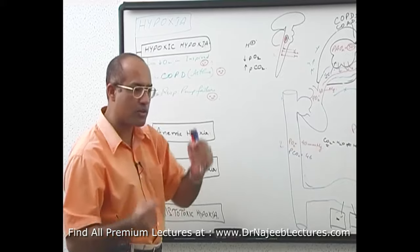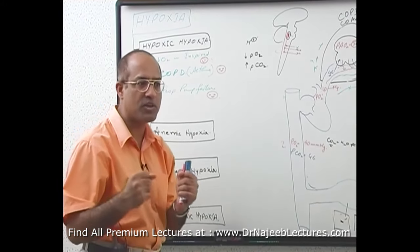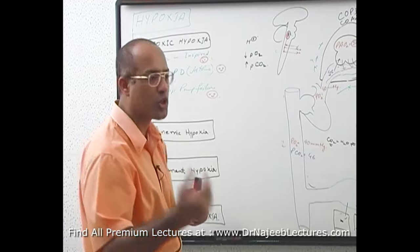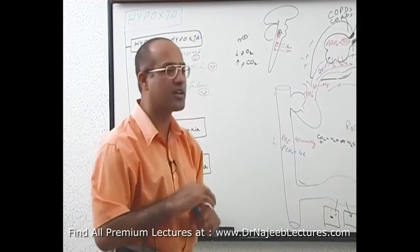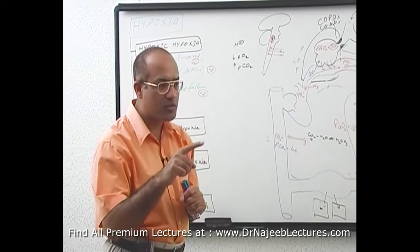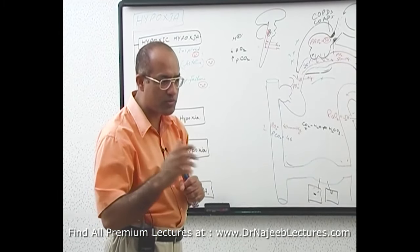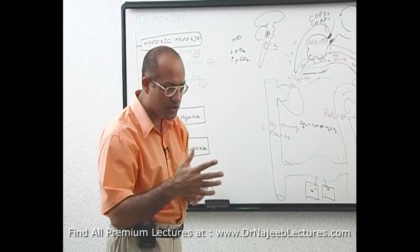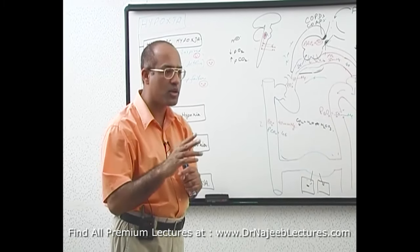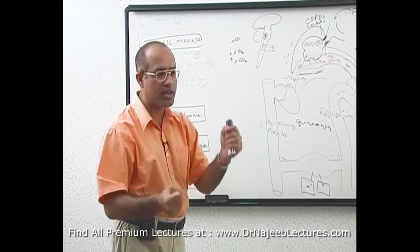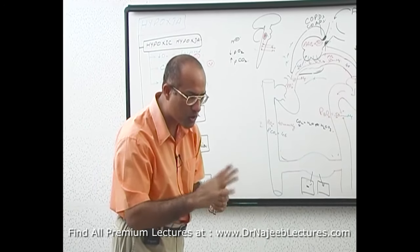In acute elevation of carbon dioxide, hypercapnia is a wonderful driver of the inspiratory center. However, hypercapnia can drive the inspiratory center only for a short time. If there is chronically elevated carbon dioxide, then the inspiratory center becomes resistant to stimulation by carbon dioxide. So hypercapnia remains present, but in chronic cases it is no longer a real driver of the inspiratory neurons.